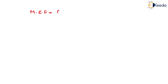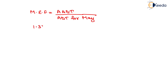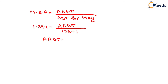The monthly expansion factor equals AADT divided by ADT for May. The monthly expansion factor is given as 1.394 and ADT for May is 13,201. Solving for AADT: AADT = 1.394 × 13,201, which gives AADT equal to 18,402. That is the complete solution to this question.